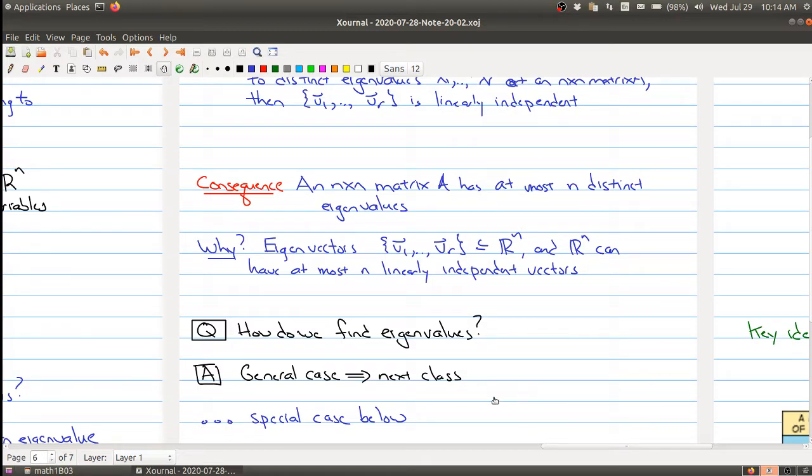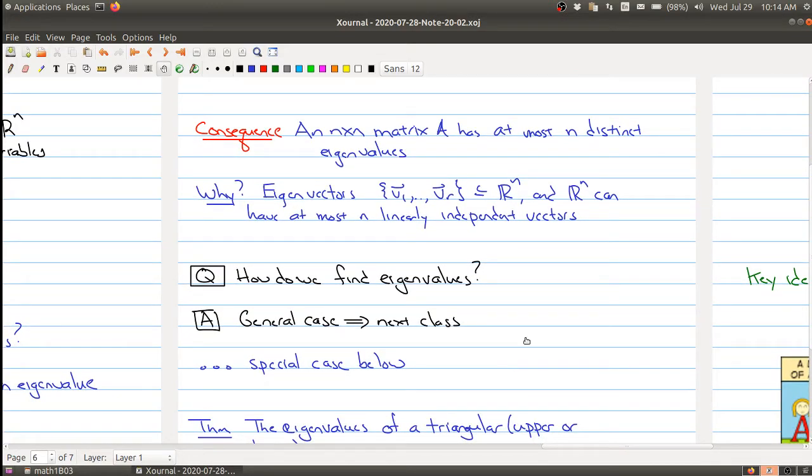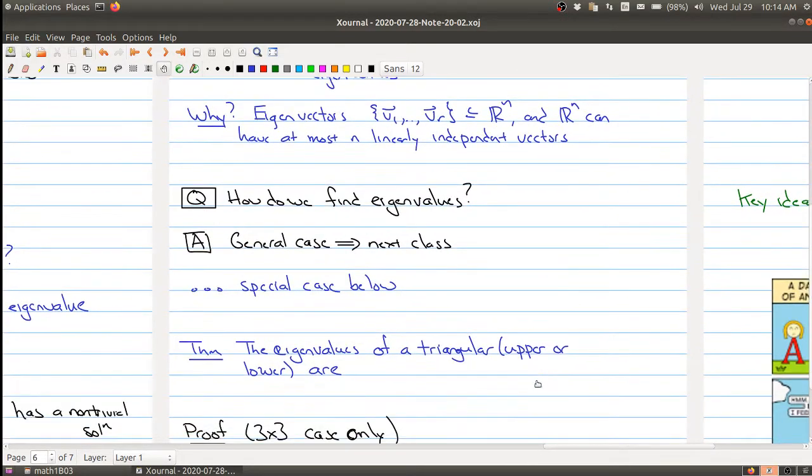So that's actually the general case will be described in the next class. But instead, I want to end off today with just doing a special case about finding the eigenvalues. And so the eigenvalues of a triangular - and this could be an upper or lower matrix - are simply the entries on the diagonal.